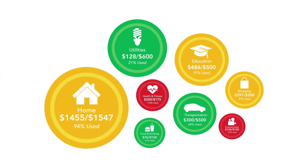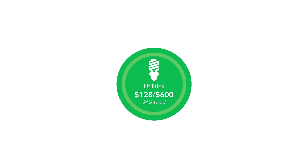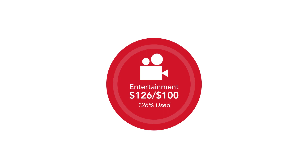Start by clicking the Auto Generate button. Bubbles will then appear on your screen. A green bubble indicates you are well within your budget, yellow is near budget, and red is over budget.